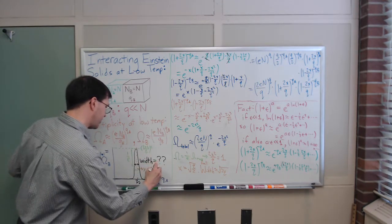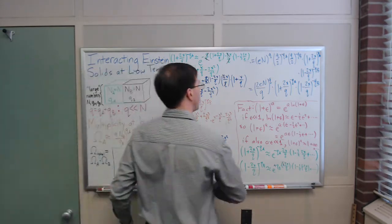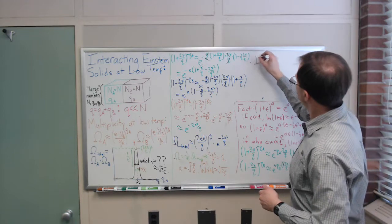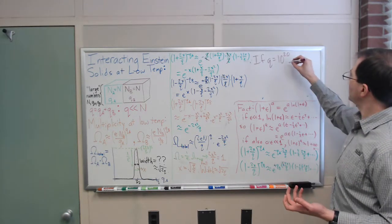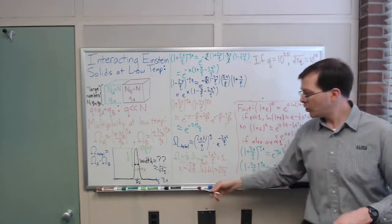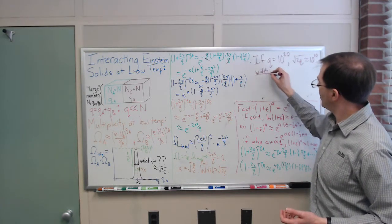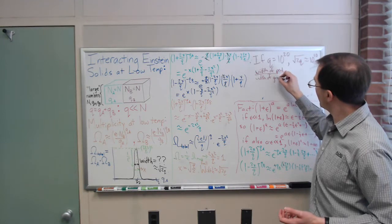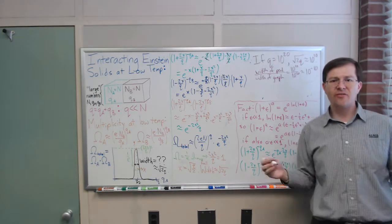The full width is approximately sqrt(2Q). If Q = 10^20 units of energy, then sqrt(2Q) ≈ 10^10, which sounds large. But the total width of the graph — the range of Q_A — is Q = 10^20. So the width of the peak divided by the width of the graph is 10^10 / 10^20 = 10^(-10).